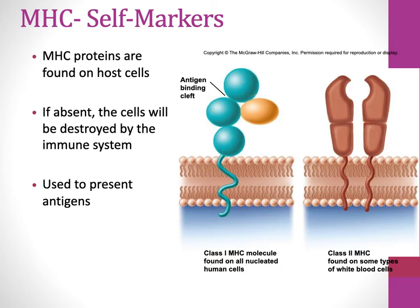Immune cells also have MHC class 1 because they can become virally infected and need to communicate with other immune cells. But what's unique about immune cells is that they also have MHC class 2, which has two transmembrane domains — class 1 has 1, class 2 has 2. MHC class 2 is found on all leukocytes. After phagocytosis, it's MHC class 2 onto which phagocytes load the digested antigen pieces so they can interact with receptors on other cells.